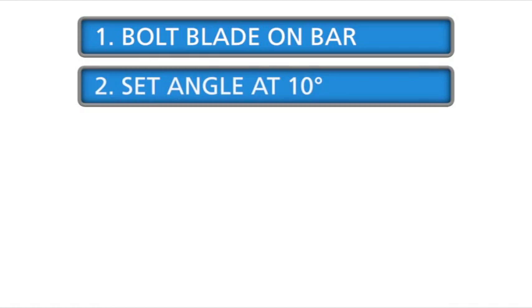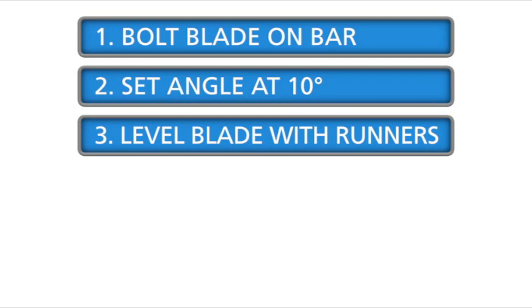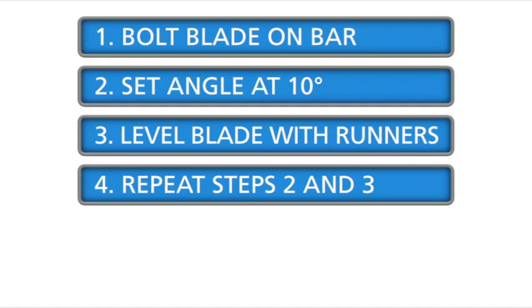When changing blades, follow this sequence. Bolt the blade securely on the blade bar. Set the 10 degree angle with the center hand wheel. Set the blade ends level with the runners on both sides with the side adjustment screws. Repeat steps 2 and 3 again until the 10 degree angle remains constant.